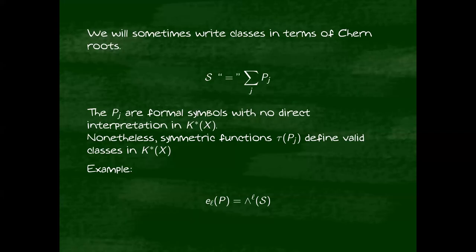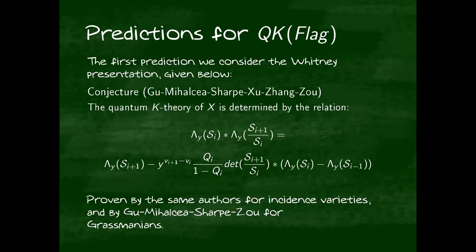If you haven't seen this construction before, imagine pulling back to some bigger variety where the bundle splits and working there. So now that we've established some things about the usual K-theory, we're going to talk about some predictions for the quantum case. So one of these is the Whitney presentations, which are based on a deformation of the Whitney sum formula that we gave previously. These are conjectured by Gu, Mihalcea, Sharpe, Xu, Zhang, and Zou. And they're written as follows for a general flag.